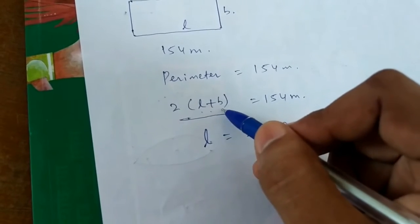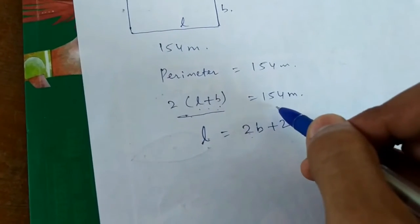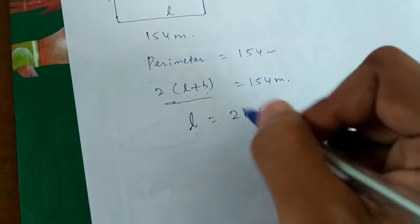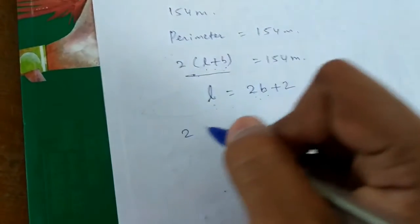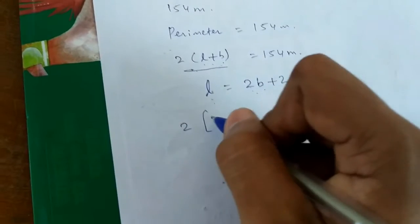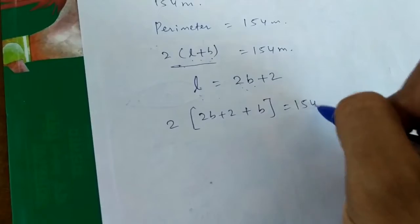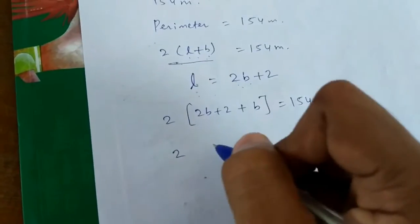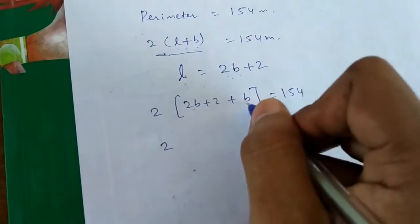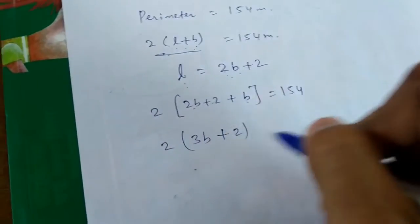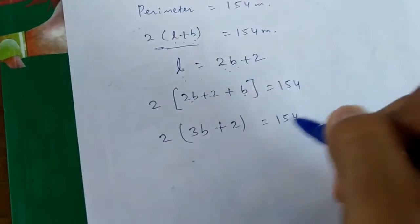2 into length plus breadth equals 154. Putting length as 2b plus 2, we get 2 into (2b plus 2) plus b equals 154. This gives 2 into 2b plus b, which is 3b, plus 2 equals 154.